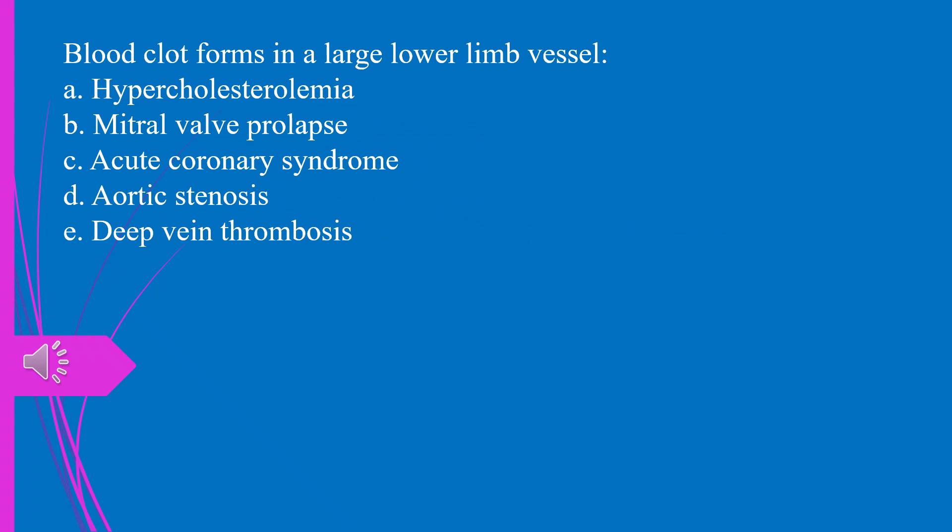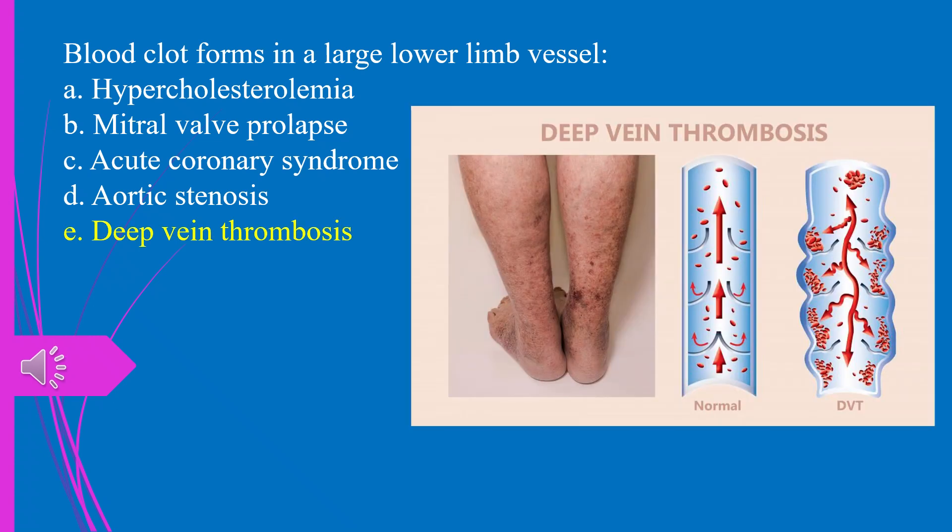Blood clot forms in a large lower limb vessel. A. Hypercholesterolemia. B. Mitral valve prolapse. C. Acute coronary syndrome. D. Aortic stenosis. E. Deep vein thrombosis. The answer is E. Deep vein thrombosis.